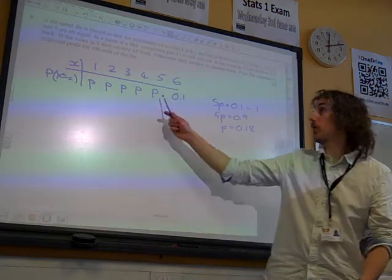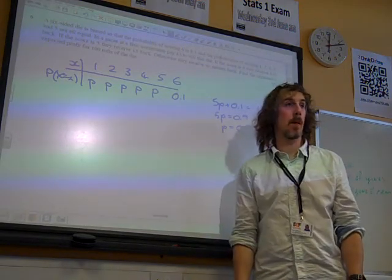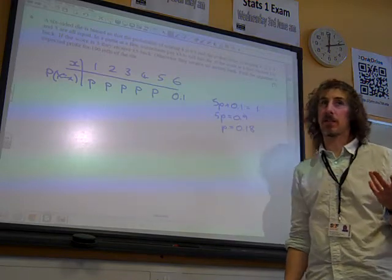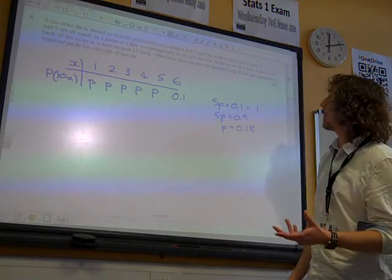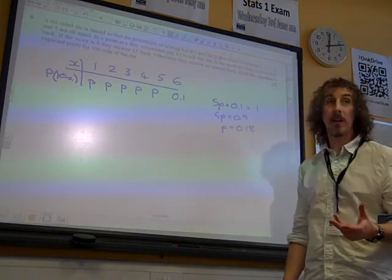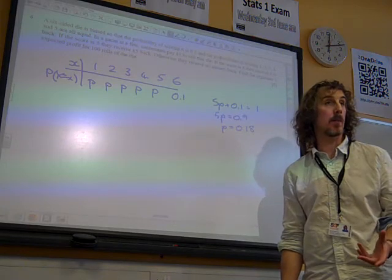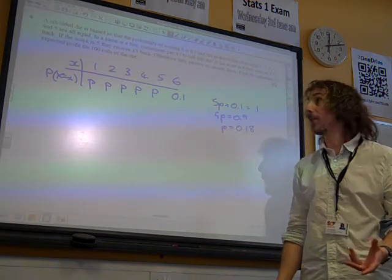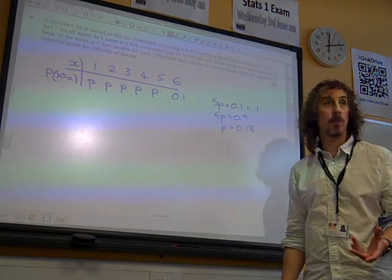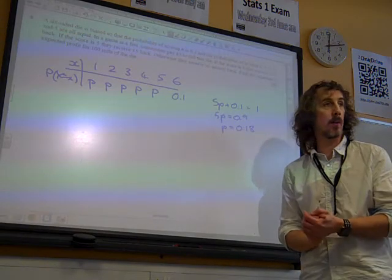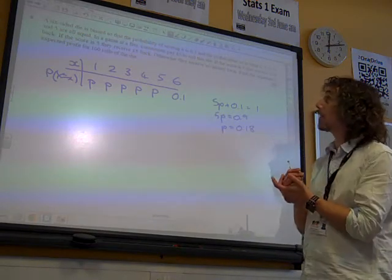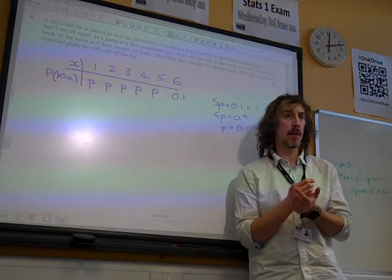So, that's the probability of each of these individual things. Now, I've got to think about something else. Because now I've got to think about the profit that the organiser makes. So, I'm going to use a different variable now. Let's use Y for the sake of argument. And he makes... Let's think, what profit does he make from this?